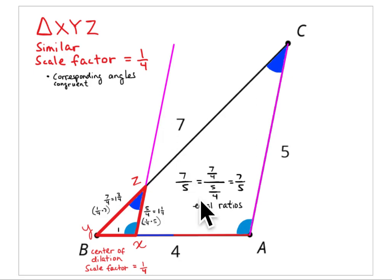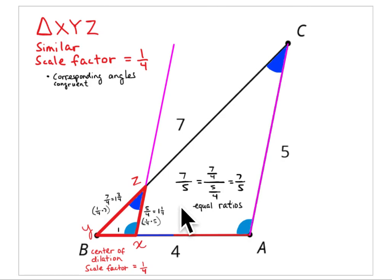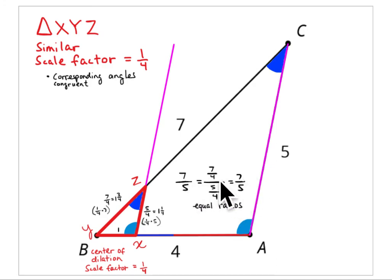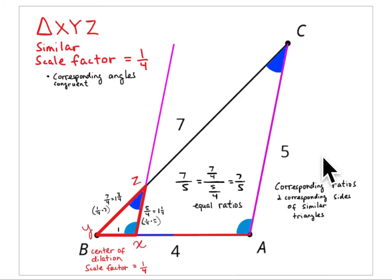The problem asks for the ratio of the long side to the medium side. This is 7 to 5. That means the corresponding sides of the scaled triangle are seven-fourths to five-fourths. Seven to five equals seven-fourths to five-fourths — it's 7 of something compared to 5 of those same things, so the ratio is still 7 to 5. These two ratios must be equal as corresponding sides of similar triangles.